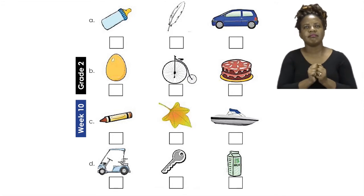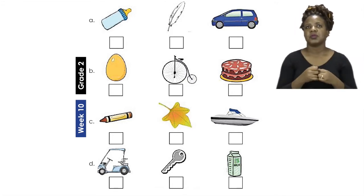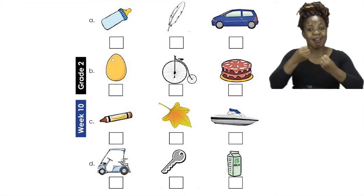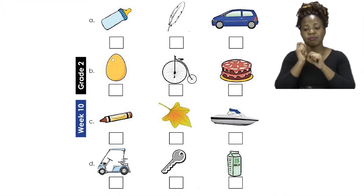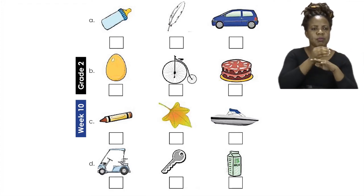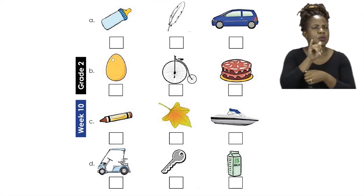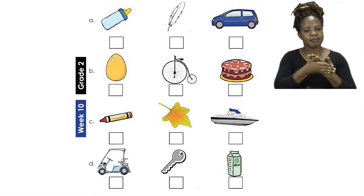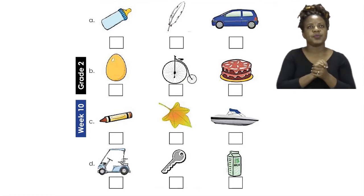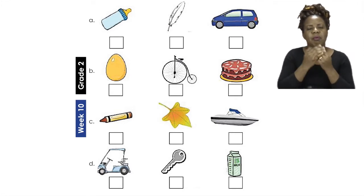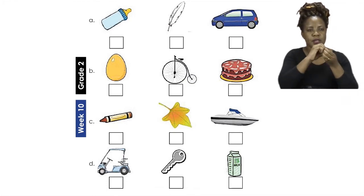If you said that the car is the heaviest, well done! So put a one in that box. Then we can take a look at the baby bottle and the feather. I think the next one is the baby bottle, because when you hold the two together, I'm very sure that the feather is very light — that's where the saying 'as light as a feather' comes from. So we're going to put number two for the baby bottle and number three for our feather.